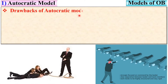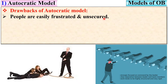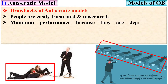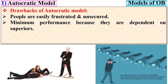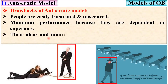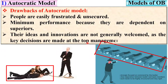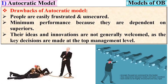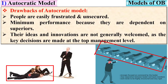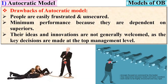Looking at the drawbacks of the autocratic model: people are easily frustrated and feel unsecured in the organization. There is minimum performance from employees because they are dependent on superiors completely. Their ideas and innovations are not generally welcome, as key decisions are made at the top management level only.